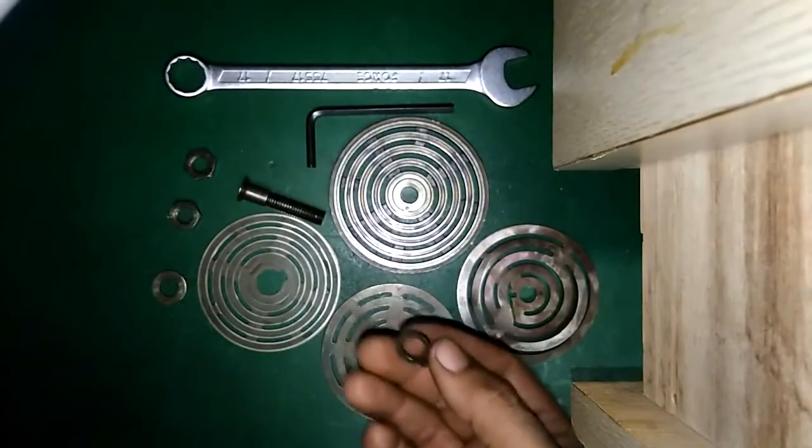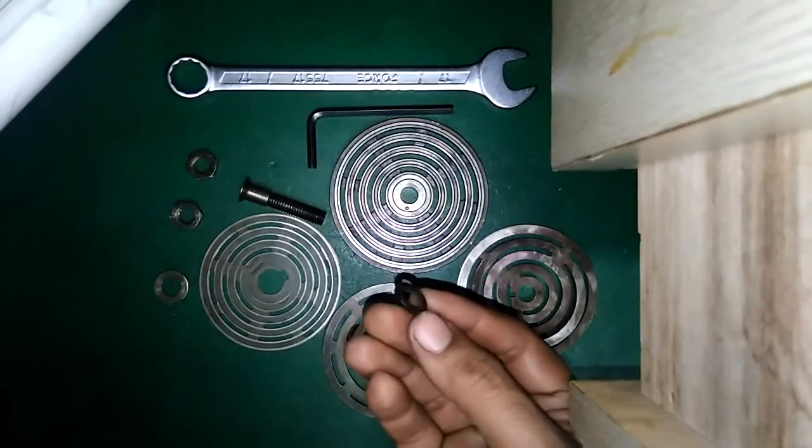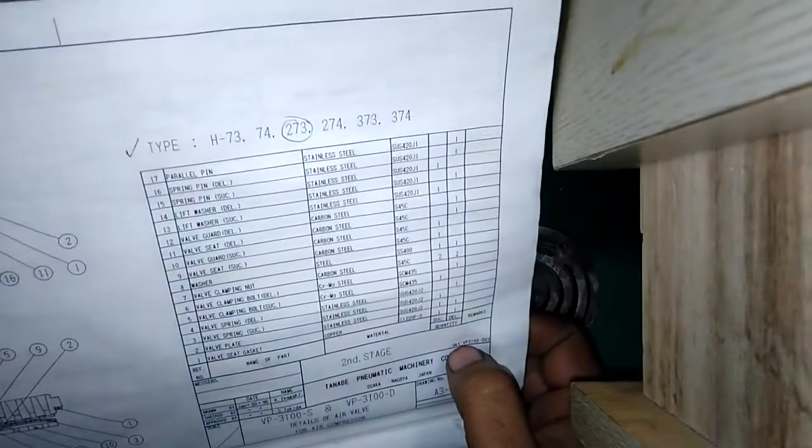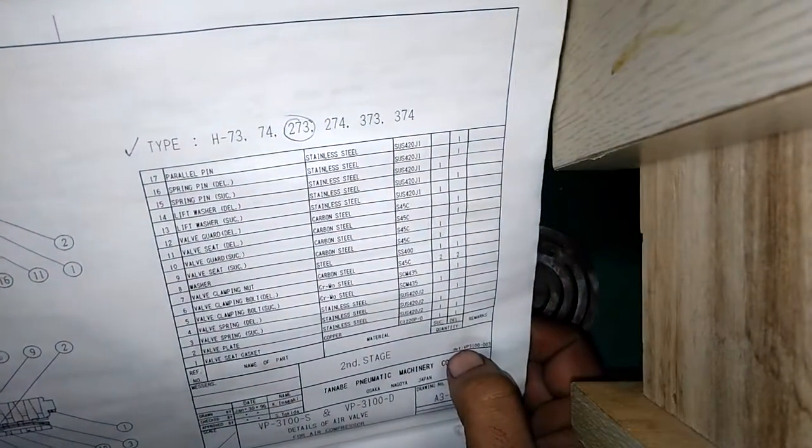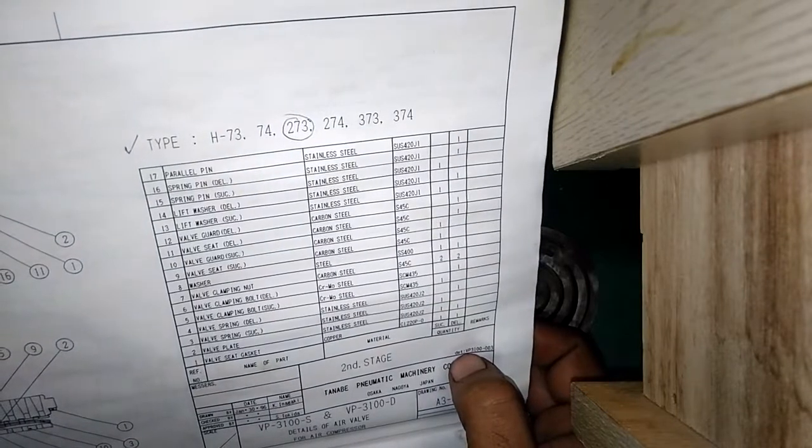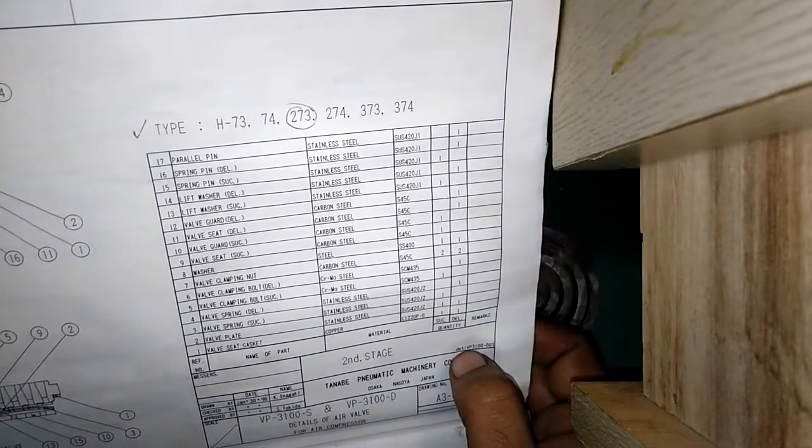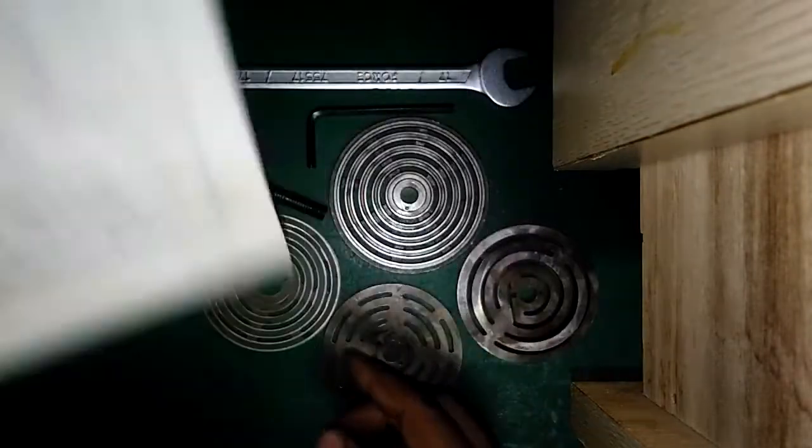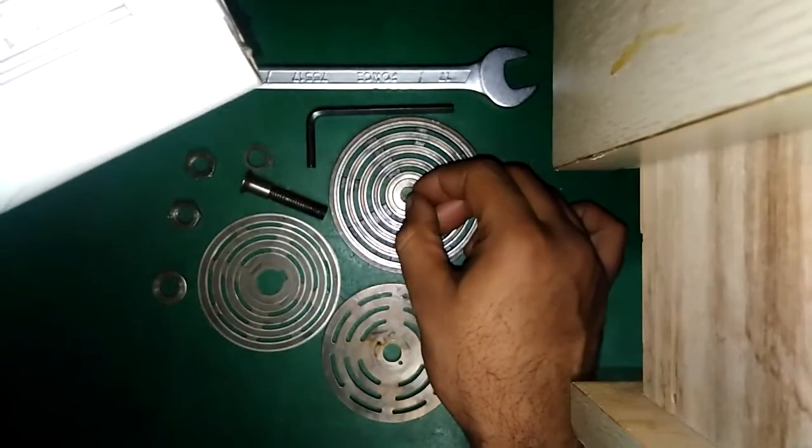This is the lift washer delivery, which will be in the delivery valve. Spring pin section, what is the spring pin? This is not mentioned in the manual.